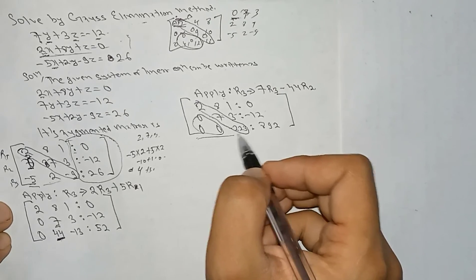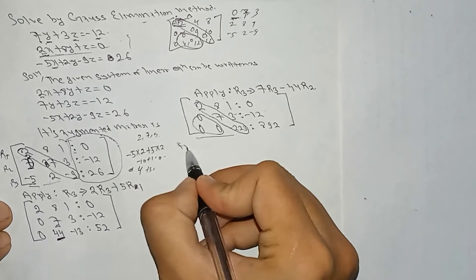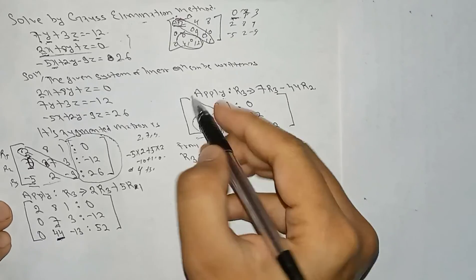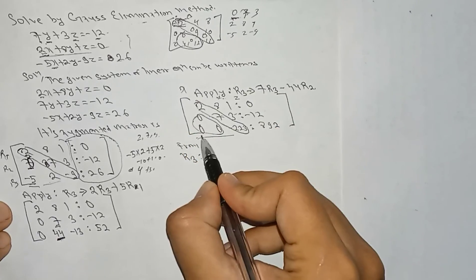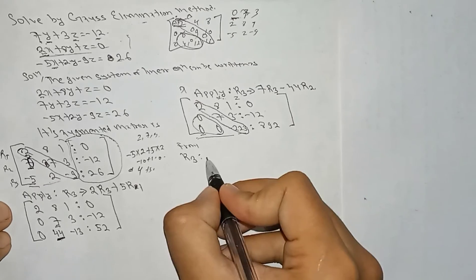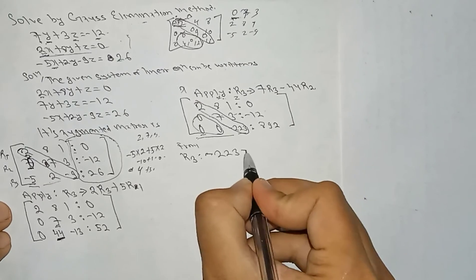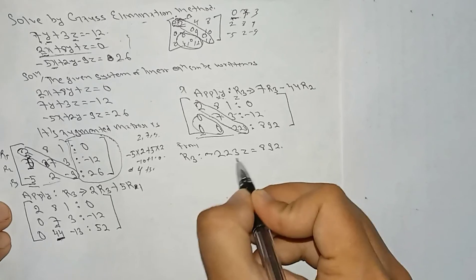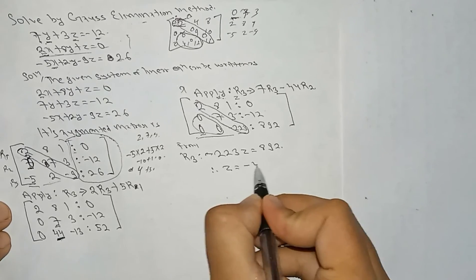We have obtained the upper triangular matrix. Now we can perform back substitution starting from R3. This gives us: minus 223z equals 892. Therefore, z equals minus 4.